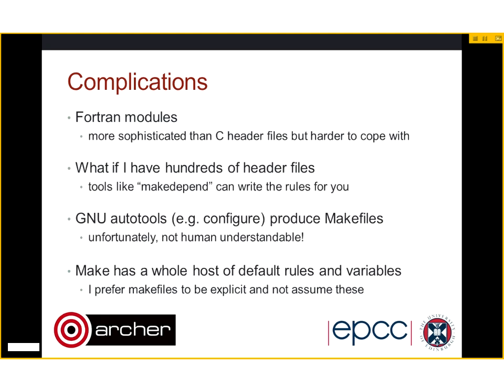Make has a whole host of default rules and variables. I think you should not assume these. For example, if you do make file.o without a rule, Make will guess that .o files are created from .c files and compile using GCC. These defaults may vary from system to system, making your Makefile non-portable. That's why I like .SUFFIXES colon — it tells Make to forget all the rules it thought it knew and let you specify what it needs to know.